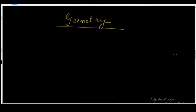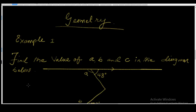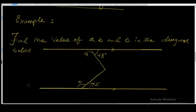Today we're going to use all those concepts to solve problems involving geometry. Example one says: find the value of a, b, and c in the diagram below. In this diagram we are to find angles a, b, and c — this angle here is called c.